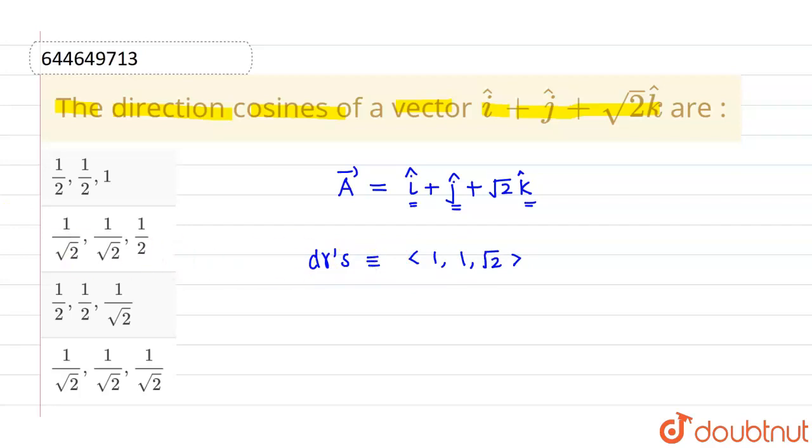Now for changing direction ratios into direction cosine, we generally divide each component by magnitude of the vector.